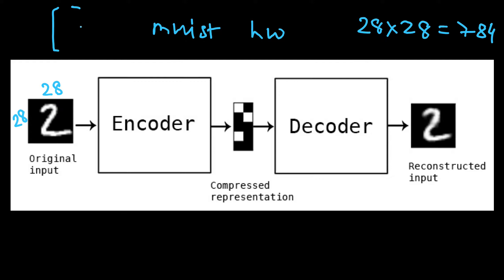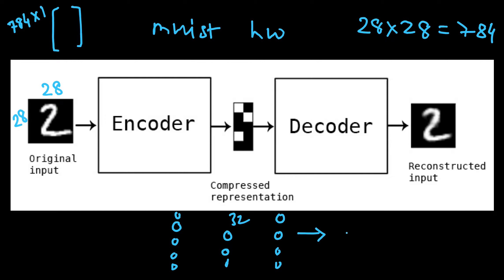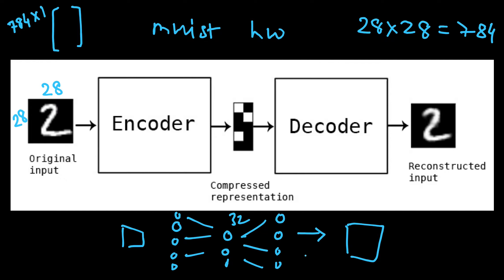Each pixel takes a value from 0 to 255, so we have a vector of 784 elements (784x1). We can build a network with 784 nodes in the first layer, then an intermediate layer of 32 nodes, and finally 784 nodes in the output, which we reshape to create the output image. So we take the input image, reshape it to 784x1, compress it to a lower dimension, then back to 784 and reshape to 28x28.